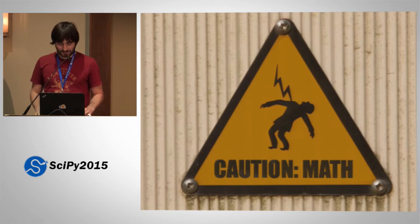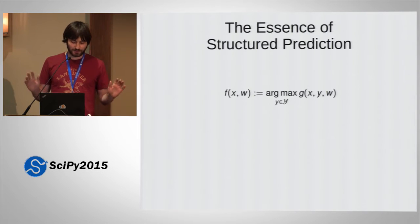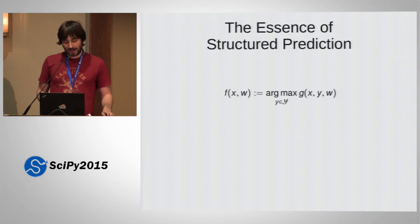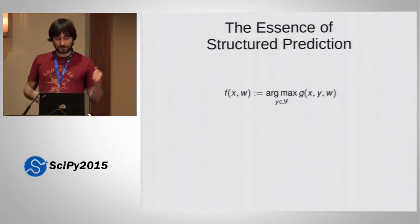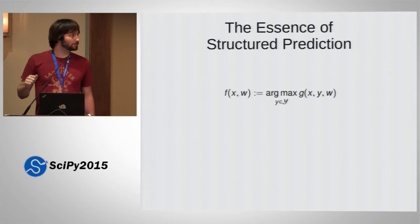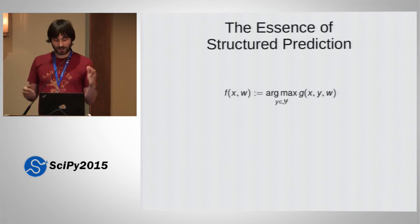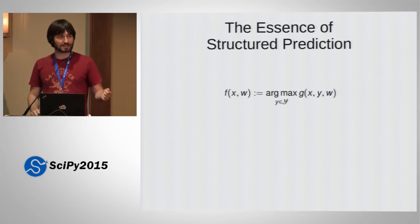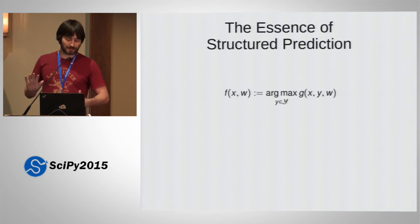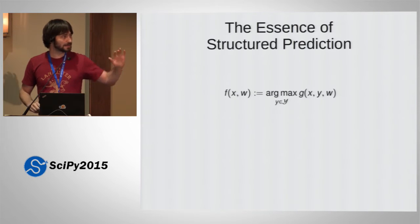So now there's going to be some math. The essence of structured prediction, in the most general formulation, is you want to learn a function f that gets some input features x and some learned parameters w, and this f computes some prediction y. The way you do this is you get a compatibility function g that says how good is this possible labeling y together with my data x. So x is the image, y is the possible labeling, and you try to find y that explains the pixels best given some learned parameters w. Then you pick the labeling that fits the data best.